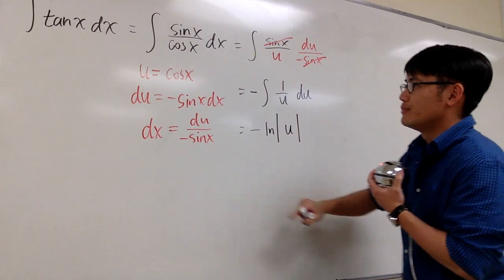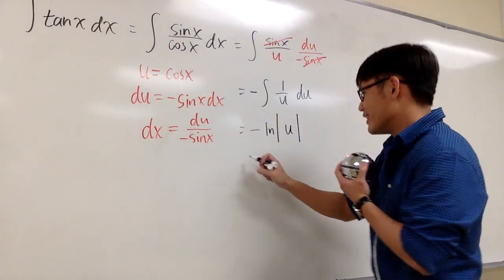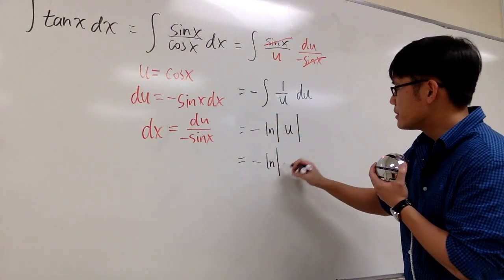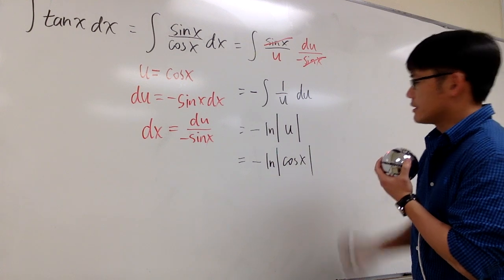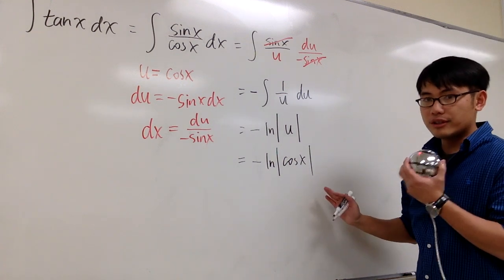And now, what's u? u is cos x. So we can just write this down as negative ln absolute value of cos x. And this is pretty much it, nothing wrong with this.